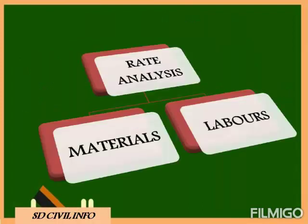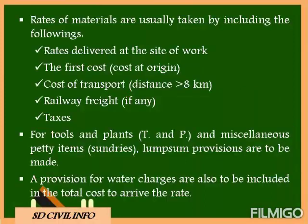Rate analysis is usually worked out for the unit of payment of the particular item of work under two heads: materials and labors. The cost of materials and labors are added together to give the cost of the item of work. The rates of materials are usually taken by including the following items: the rate delivered at the site of work, the first cost at origin, and the cost of transport — in case the materials are to be carried from a distance of more than eight kilometers.